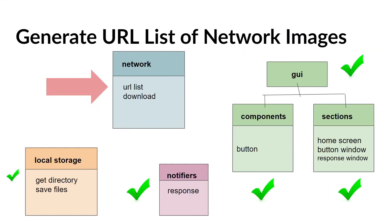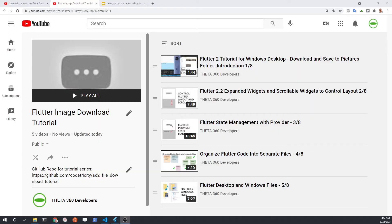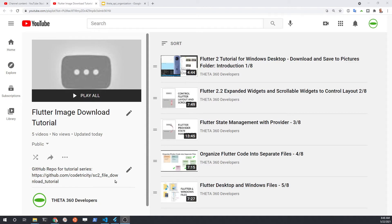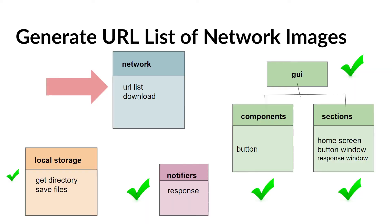Welcome to our adventure in learning to build Flutter applications. We're going to show you how to generate hundreds of test images over the network. This is part six of our video tutorial series where we're going to generate the URL list for a set of images on the network. If you want to follow along, there are five previous videos on this playlist, which also has the GitHub repository for the completed tutorial. You do not need a camera to follow the tutorial.